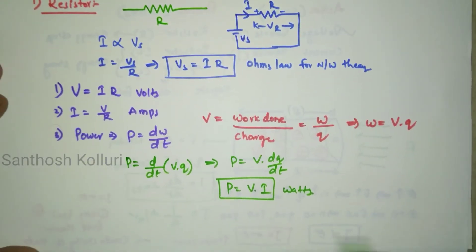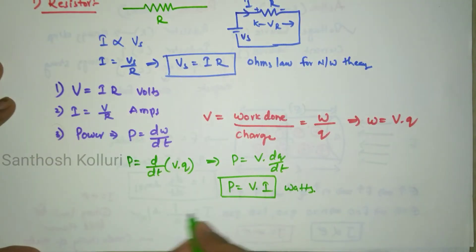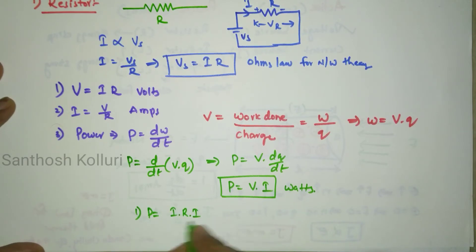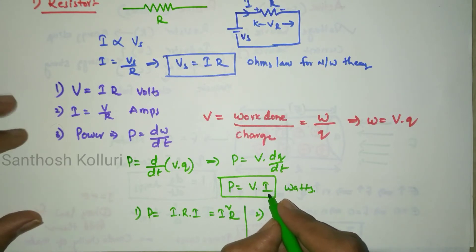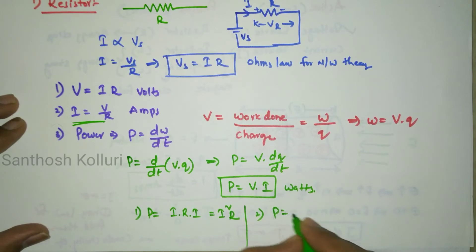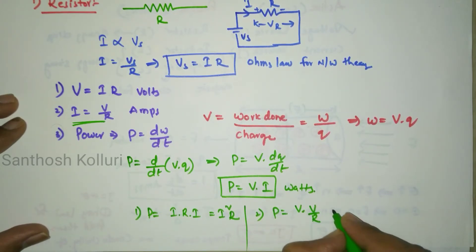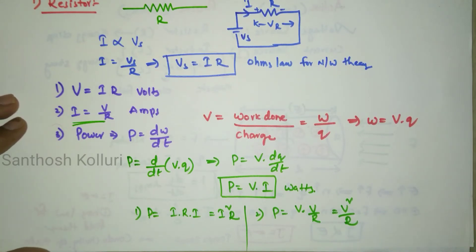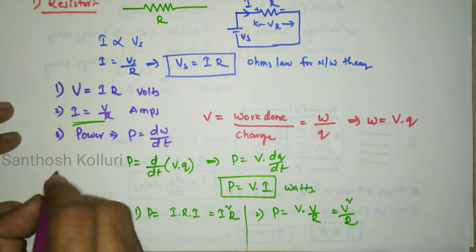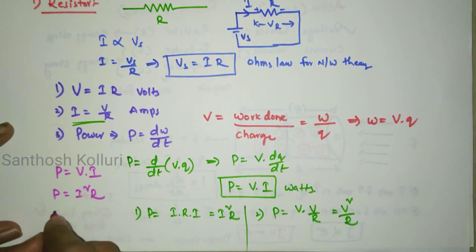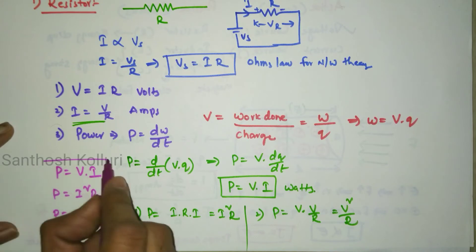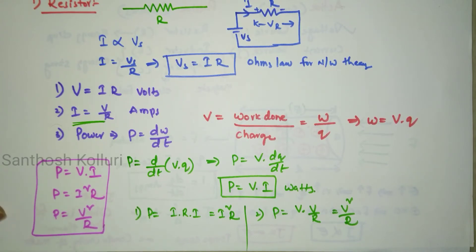Using Ohm's law, V equals I into R. Substituting into P equals VI gives P equal to I squared R. If instead I equals V by R is substituted, power becomes P equal to V squared by R. So the three power formulas are: P equal to VI, P equal to I squared R, and P equal to V squared by R. These are the formulas for power calculation for a resistor.